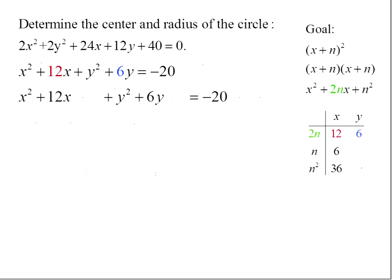For y, we have that 2n is 6, and so n being half of that would be 3. And n squared, 3² is 9.